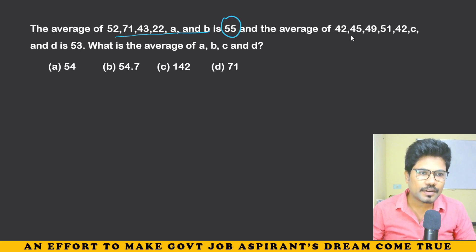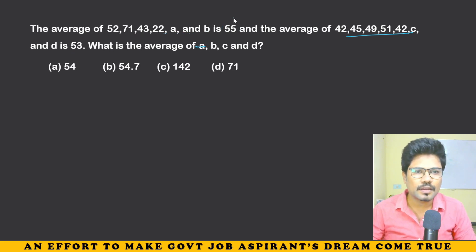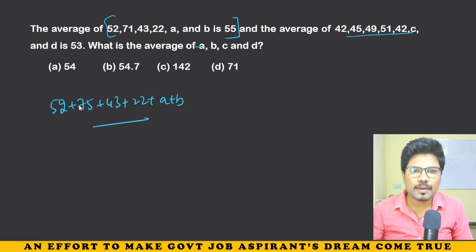The average of these is 53. So what is the average of this? So: 52 plus 75 plus 43 plus 22 plus A plus B, divided by 6, is equal to 55.